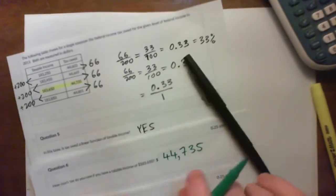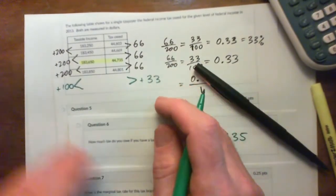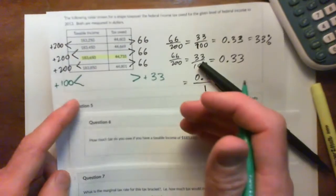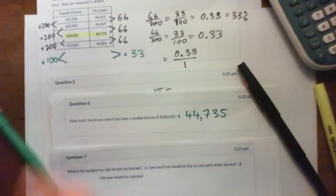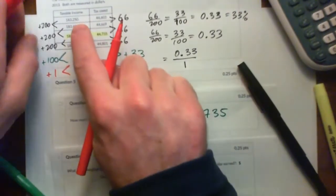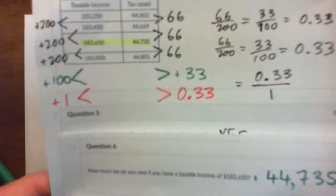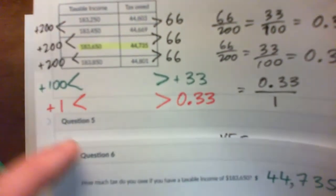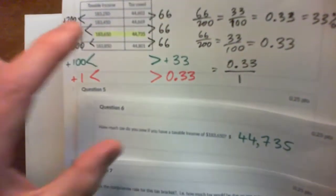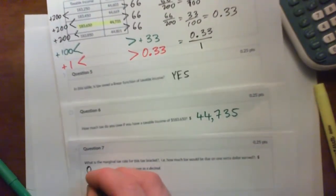So $66 over $200 gives $33 over $100. For every $100 more I earn, I give Uncle Sam $33 and keep $67. But $33 over $100 can also be written as $0.33 over $1. For every dollar I earn over this amount, I owe Uncle Sam $0.33 — $0.33 on the dollar. So that's my marginal tax rate. For every dollar earned over $183,250, I owe $0.33. It is a linear function because the rate of change is constant — a constant increase in inputs gives a constant increase in outputs. So the answer is yes, and the marginal tax rate is 0.33.